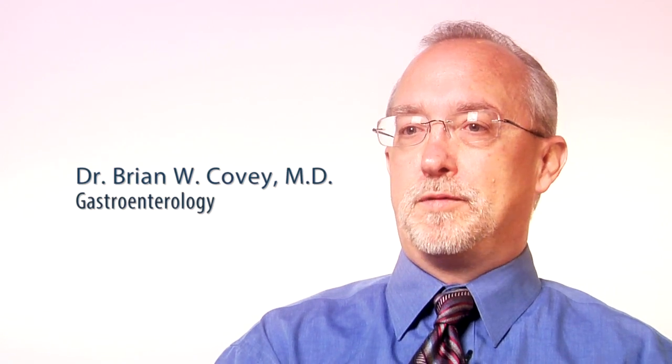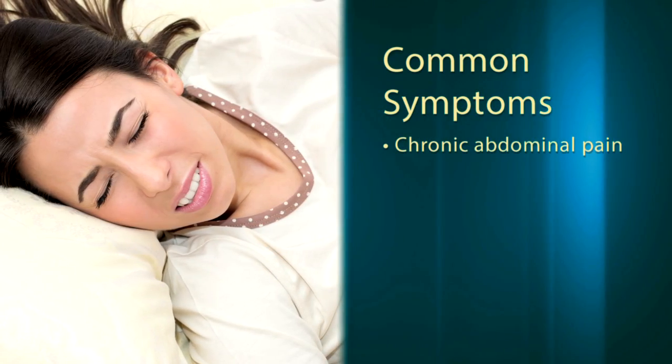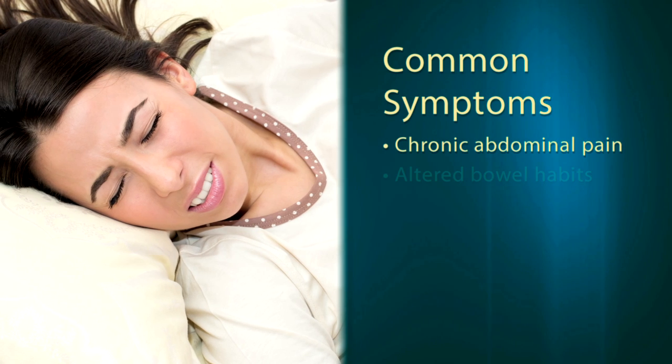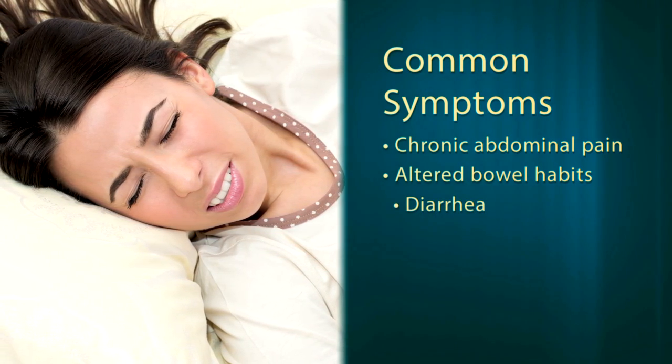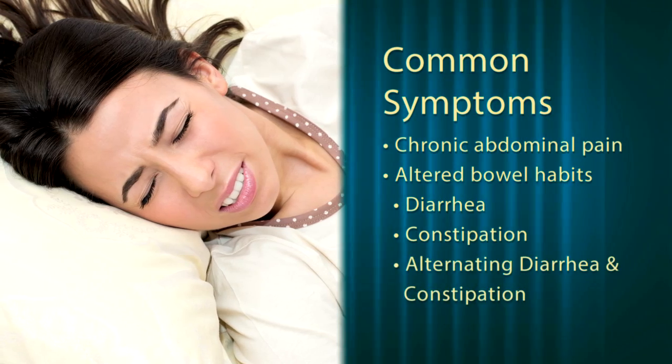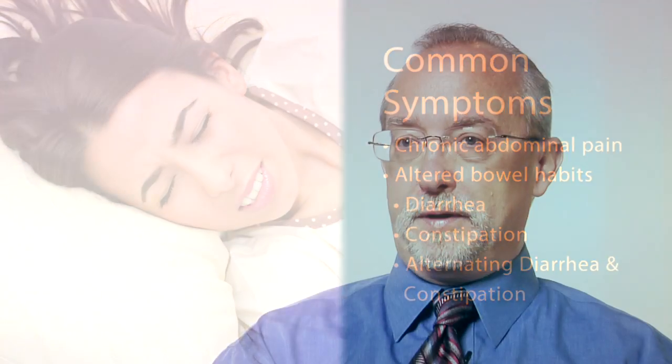Irritable Bowel Syndrome is a very common disorder and probably accounts for about 25% of our practice. Patients with that disorder will commonly have abdominal pain that's chronic in nature and altered bowel habits, and that could include diarrhea, constipation, or alternating diarrhea and constipation. When we see a patient with that, we can oftentimes tell just by taking a history as to whether they have that disease or not.